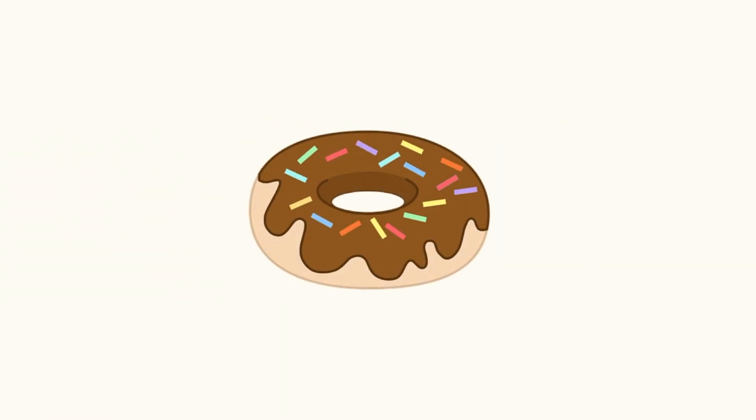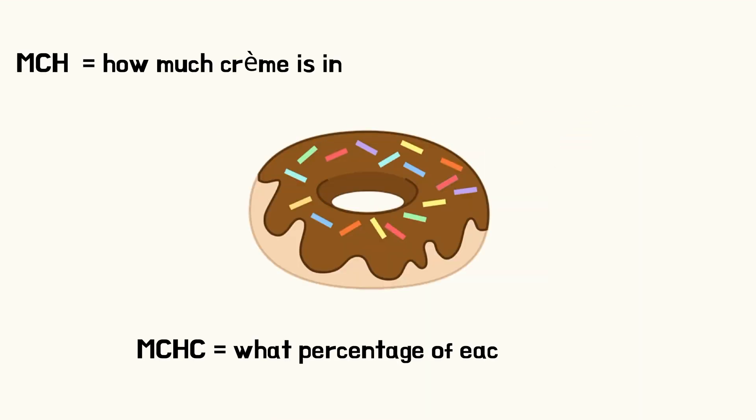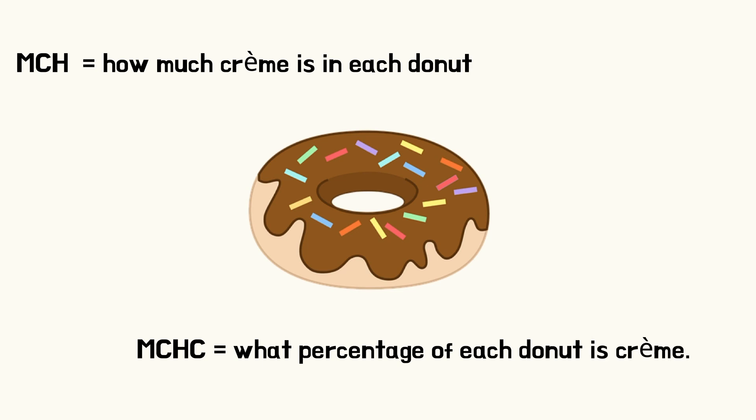Let's simplify this by imagining that our RBC is a doughnut. In this example, the MCH would tell you how much cream by weight is in each doughnut, whereas the MCHC would tell you what percentage of each doughnut is cream.